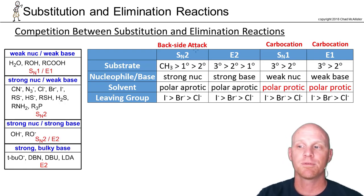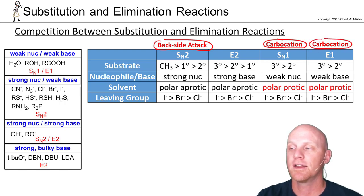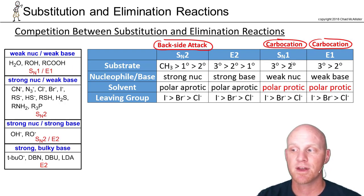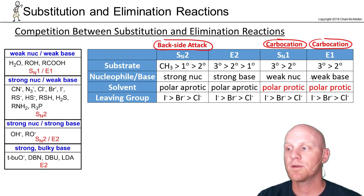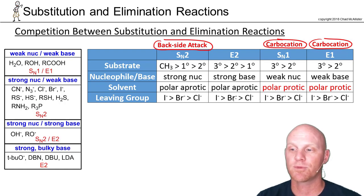Keep a couple of things in mind: SN2 is all about backside attack, while both SN1 and E1 are about carbocation formation. Since SN1 and E1 both involve carbocation formation, the same set of circumstances will favor both. For substrates, tertiary is better than secondary, and primaries don't usually react. A weak nucleophile favors SN1 and a weak base favors E1. The solvent must be polar protic for both SN1 and E1, and the leaving group trend is the same across the board.